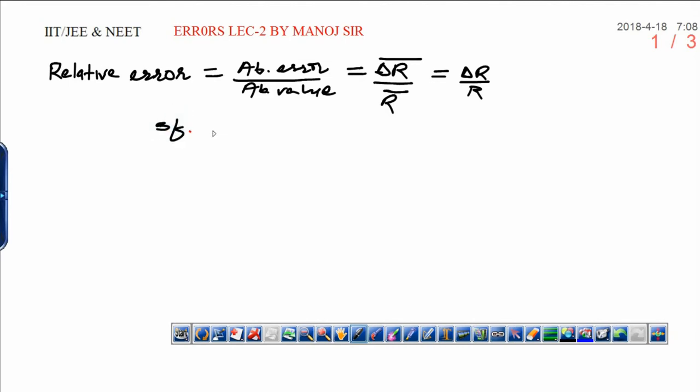If you have a quantity, if x is a quantity which can be written as a plus minus delta a, in this particular form, a is the absolute value and delta a is absolute error. Then relative error of this quantity can be written as delta a upon a.